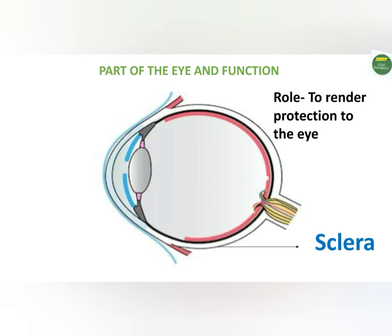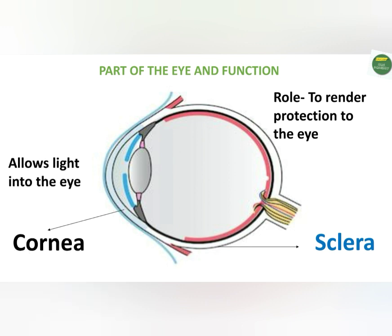The front part of this whitish protective structure, the sclera, is modified into a transparent structure called the cornea. The cornea acts as a window by allowing light into the eye through a process known as refraction.